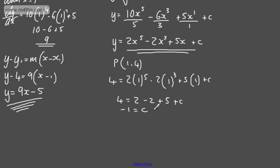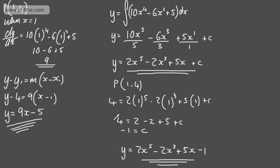Putting -1 back in, we can write that y = 2x^5 - 2x^3 + 5x - 1. That's our 5 marks in total for integrating and finding the value of c.